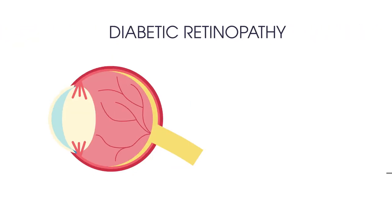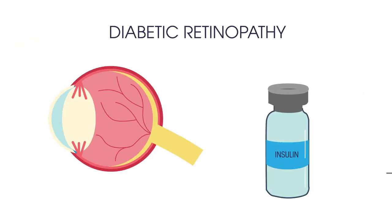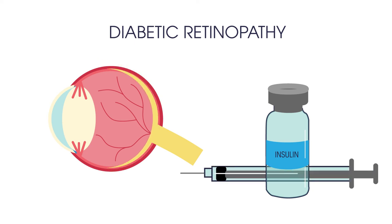Finally, diabetic retinopathy, which is a complication of diabetes caused by high blood sugar levels damaging the retina. The retina needs a constant supply of blood, which it receives through a network of tiny blood vessels. Over time, a persistently high blood sugar level can damage these blood vessels.